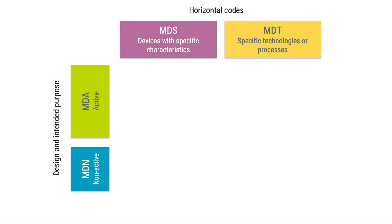I will start with the MDR codes for the Notified Bodies. They are published in the Implementing Regulation 2017-2185, so you will not find them in the actual MDR. There is a link under this video to this Implementing Regulation. These codes are divided into four categories. First, there are the MDA and MDN codes that relate to the design and intended purpose of the device. MDA codes are for active medical devices and MDN for non-active medical devices. Then we have so-called horizontal codes, divided into two categories: the MDS codes for specific characteristics of the medical device, and the MDT codes for specific technology or processes related to manufacturing.